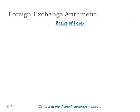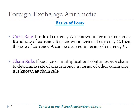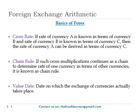Now, let's see some basic terms in forex. Cross rate: it implies that the currency rate of A in terms of C can be derived if A in terms of B and B in terms of C is known. It is done by cross multiplication of these two known rates. Chain rule: if the cross multiplication happens for more than two rates, then it is said to be in chain. Value date: it represents the date when the settlement actually takes place. It may be spot, term, cash, etc.